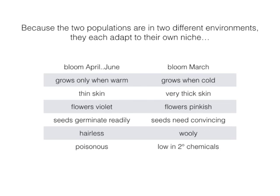This leads to the two populations each adapting to their own niche. The coastal plants would come to bloom later and for longer, whereas the desert plants would get their whole life cycle over with quickly. The coastal plants might grow only when it's warm, whereas the desert plants would adapt to growing even when cold. Coastal plants would have a normal waxy cuticle, whereas desert plants might get a really thick cuticle that prevents water loss and sunburn. Because they differ in pollinators, coastal flowers might be violet or lavender, while desert flowers might be pinkish, since flies can see red a little better than bees.